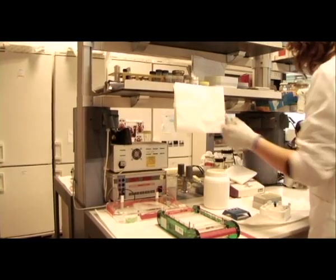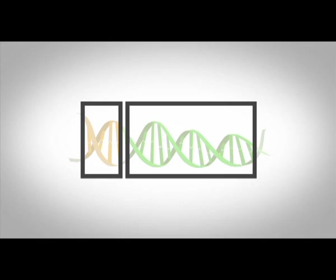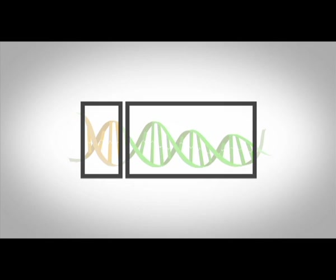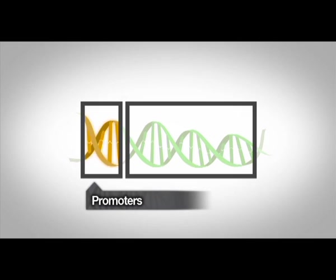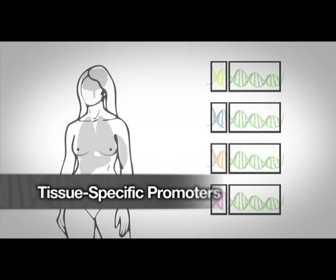In addition to the gene of interest, attention must be paid to choosing the right regulatory sequences that determine where and when the production of the therapeutic protein will take place. These regulatory sequences are called promoters, and are positioned in front of the gene to be expressed. Some promoters direct gene expression to specific cell types such as hepatocytes in the liver, cardiomyocytes in the heart, or muscle fibres in skeletal muscle. Other promoters allow gene expression simultaneously to multiple tissues.